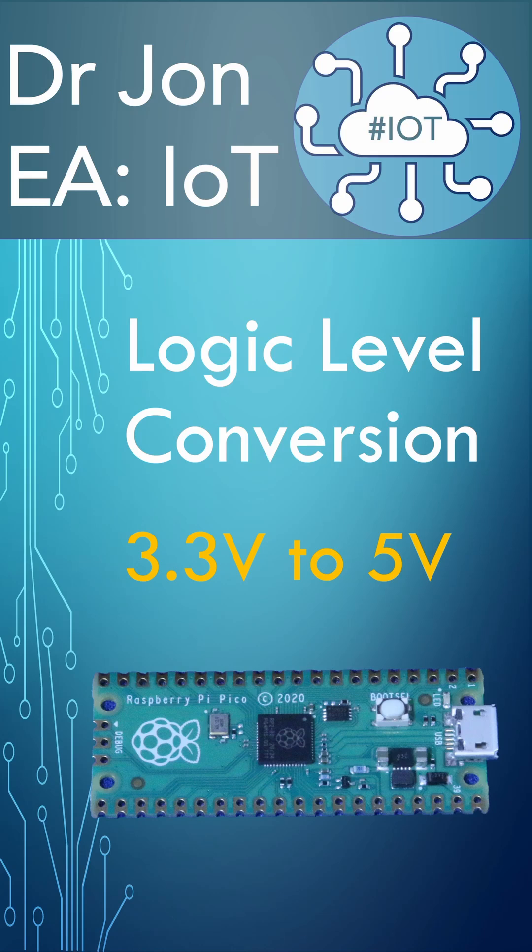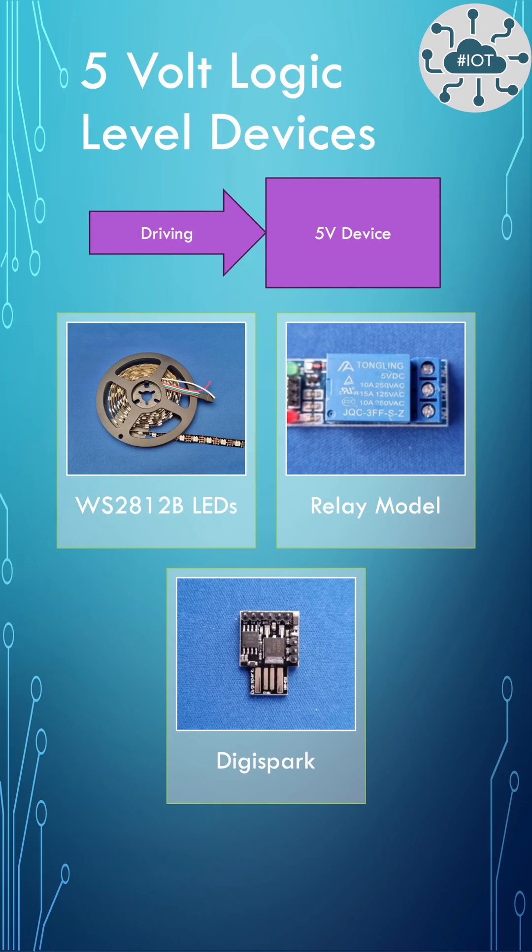Logic level conversion for the Raspberry Pi Pico. Some devices require we provide a 5 volt logic level signal when using large strips of WS2812B LEDs, driving relay modules, or interfacing to 5 volt microcontroller modules like the DigiSpark.